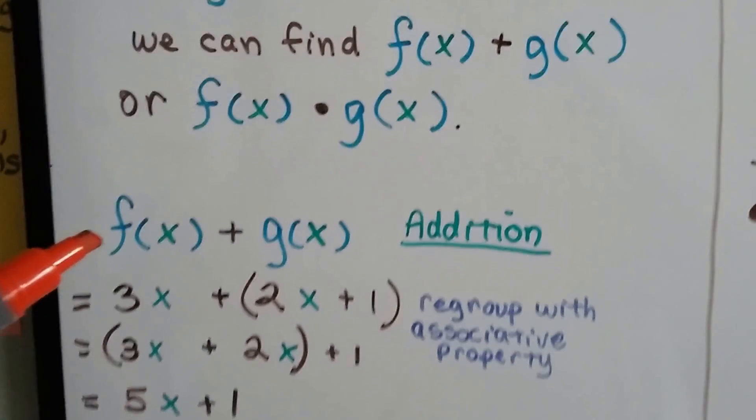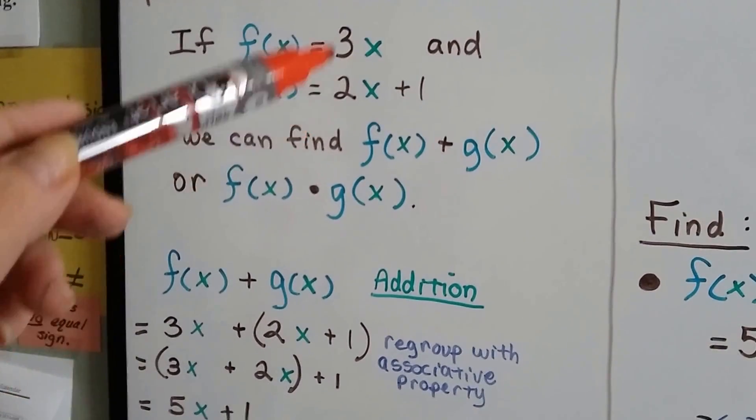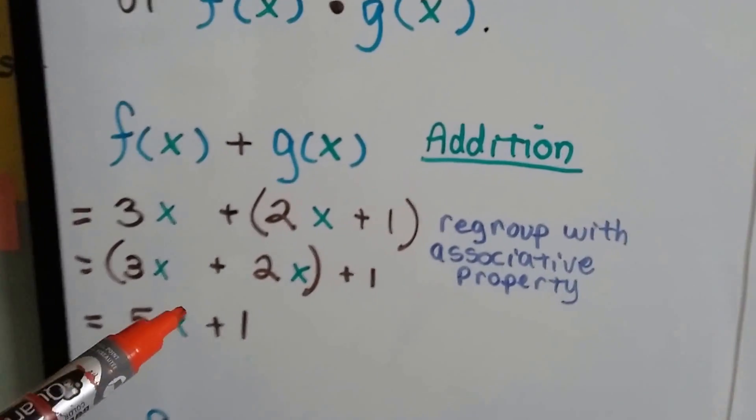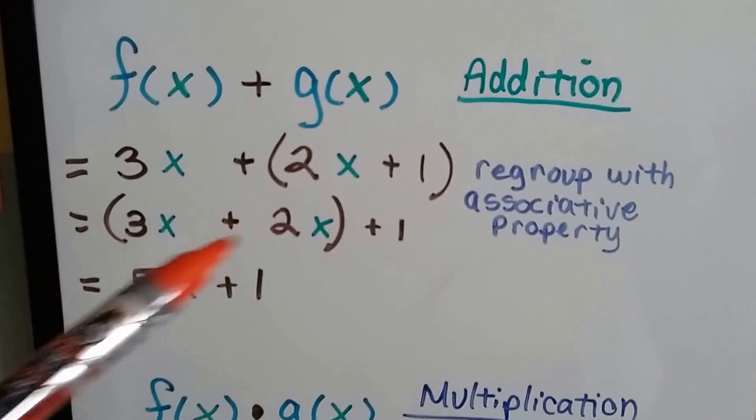So for the addition one, if this is what they equal and we add them, we have 3x plus 2x plus 1. Just regroup with the associative property and put the coefficients with x together, we get 5x plus 1.